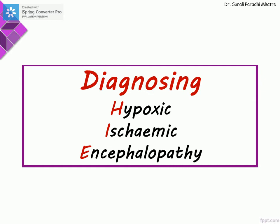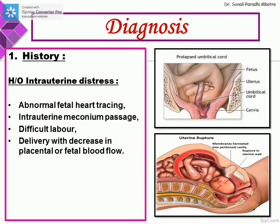Diagnosing HIE starts with history. We need to see if there is any history of intrauterine distress, since the majority of HIE cases have antenatal origins. We look for abnormal fetal heart tracings, intrauterine meconium passage, difficult labour, and decreased placental or fetal blood flow. For intrapartum problems, a documented APGAR score is needed — a 10-minute APGAR score of less than 5 is very strongly associated with HIE.